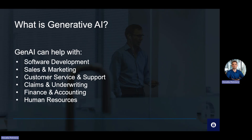In the claims and underwriting area, automation reduces manual data entry, and AI's data analysis capabilities allow for more accurate risk assessments. For finance and accounting, expense tracking becomes more streamlined and financial forecasting more accurate with AI's data processing capabilities. And for human resources, the recruitment process can be enhanced, as AI can quickly match candidate profiles with job requirements.